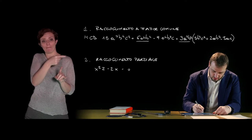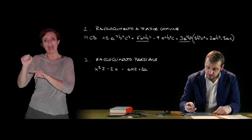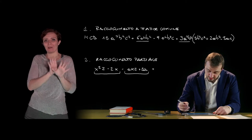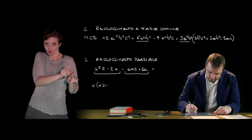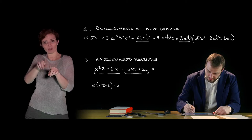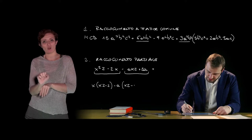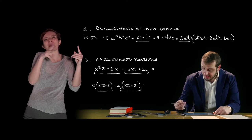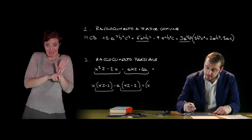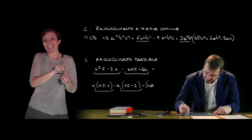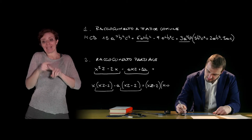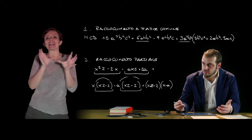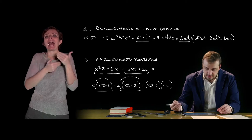Abbiamo il polinomio x²z − 2x − axz + 2a. Si nota che non è possibile un raccoglimento a fattor comune, però è possibile raccogliere x tra i primi due termini e raccogliere il fattore −a tra il terzo e il quarto termine. Il risultato deve dare parentesi con lo stesso identico binomio al loro interno. In questo modo si può riapplicare il raccoglimento a fattore comune: (xz − 2) che moltiplica (x − a). Se le parentesi non restituiscono lo stesso termine, il raccoglimento non è utile.